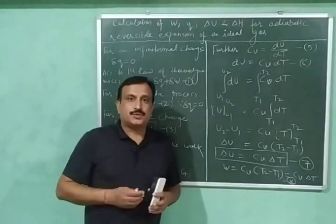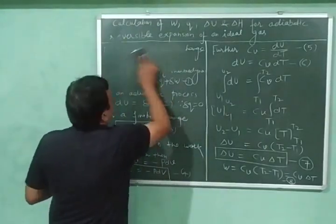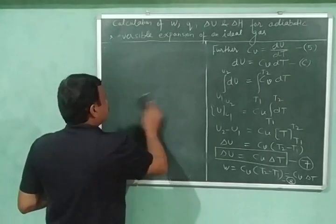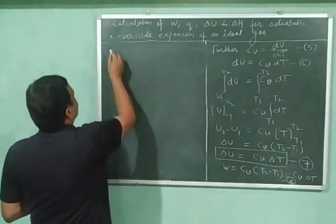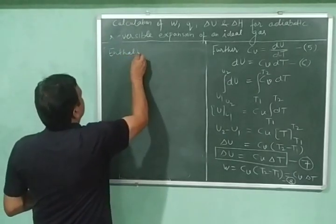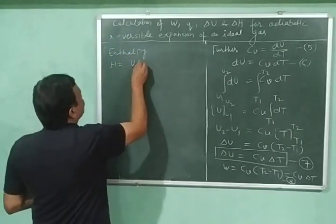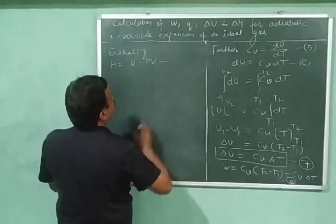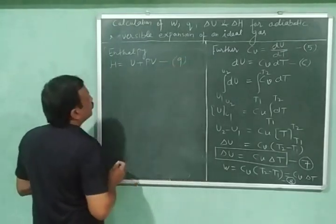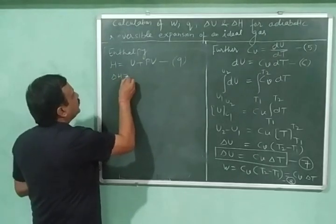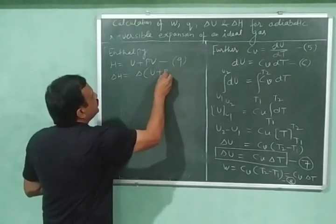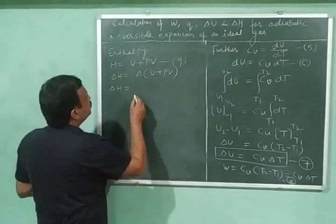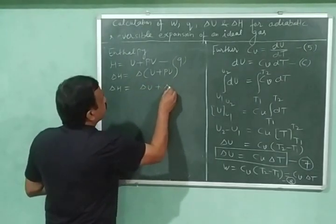Now let us derive the expression for the change in enthalpy. We know that enthalpy H is equal to U plus PV — let this be equation number nine. From this equation, delta H will be equal to delta (U plus PV).